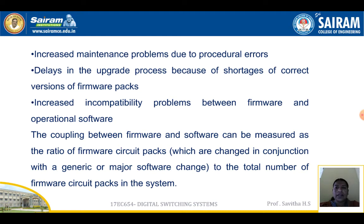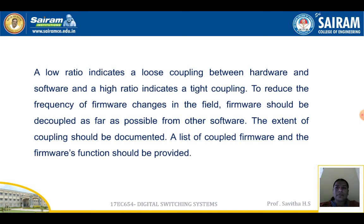Additional problems include increased maintenance issues due to procedural errors, delays in the upgrade process due to shortage of correct firmware versions, and increased incompatibility between firmware and operational software. The coupling between firmware and software can be measured as the ratio of firmware circuit packs changed in conjunction with a generic or major software change to the total number of firmware circuit packs in the system. A low ratio indicates loose coupling; a high ratio indicates tight coupling. To reduce firmware changes, firmware should be decoupled as far as possible from other software, and the extent of coupling should be documented.